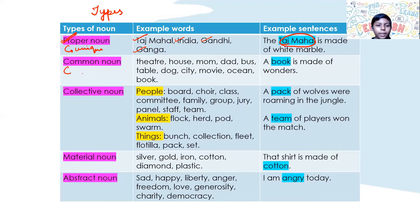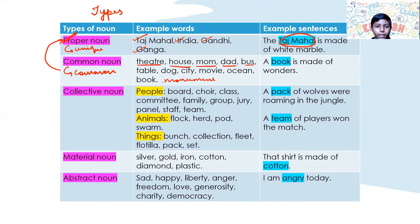Common noun is something in common. So if we name a common noun, then it becomes a proper noun. Examples: theater, house, mom, dad, bus, and even monument. So if we name a monument like Taj Mahal, then it becomes a proper noun. But monument itself is a common noun.